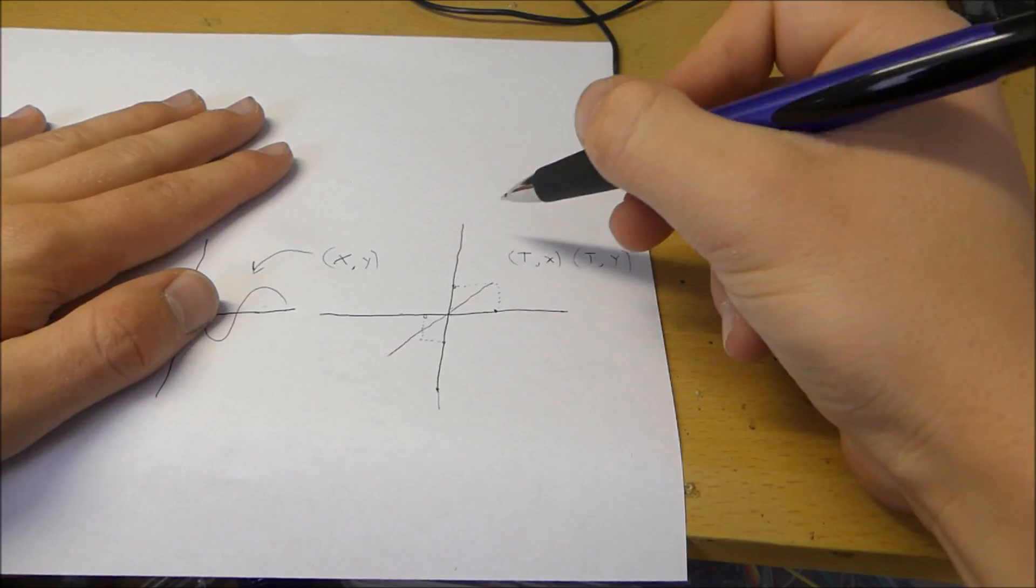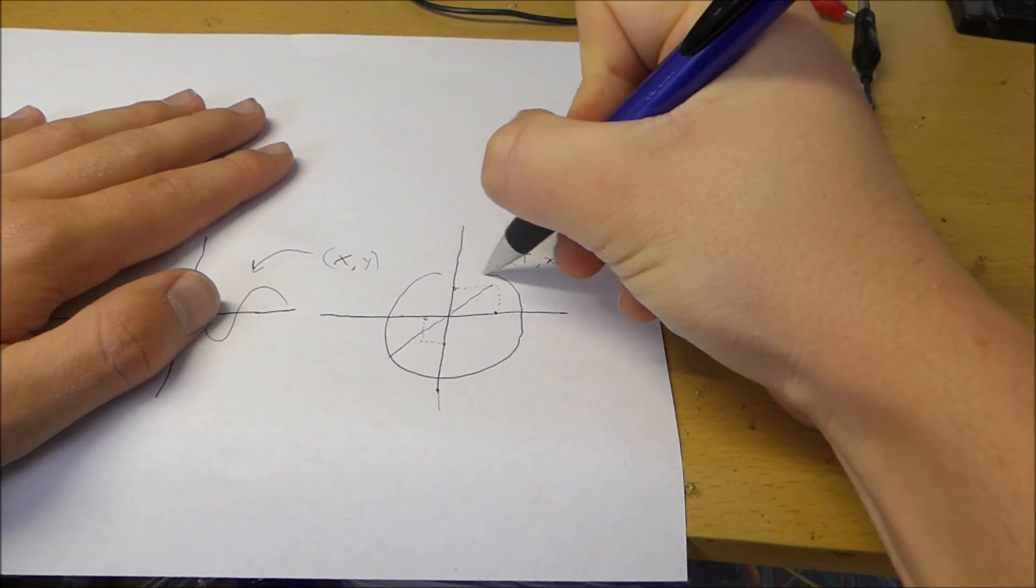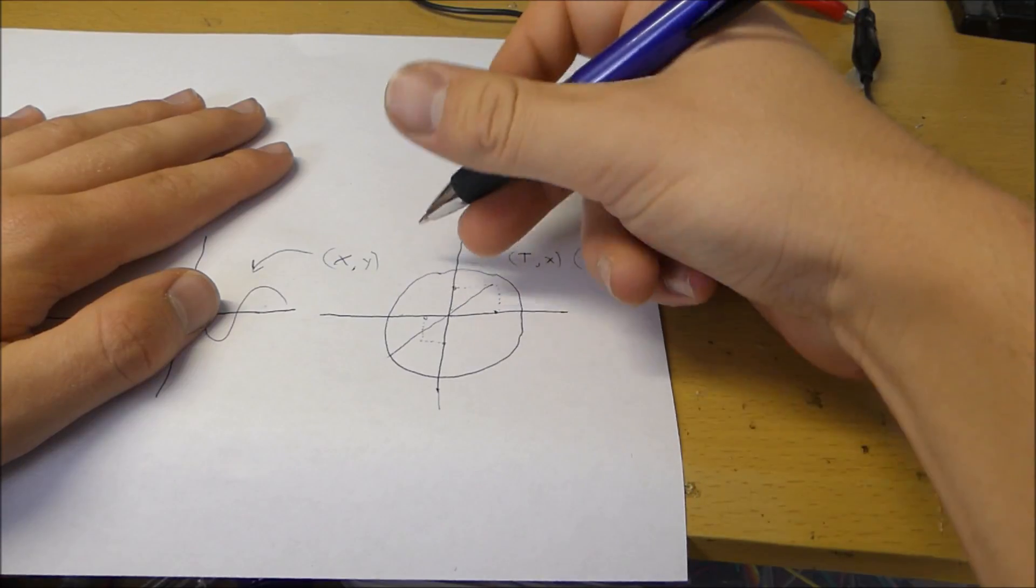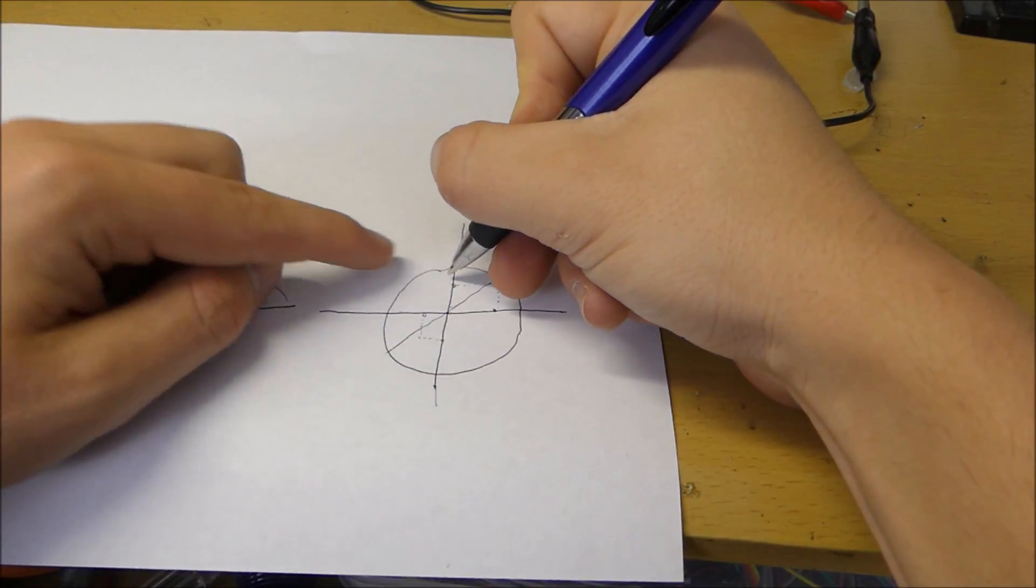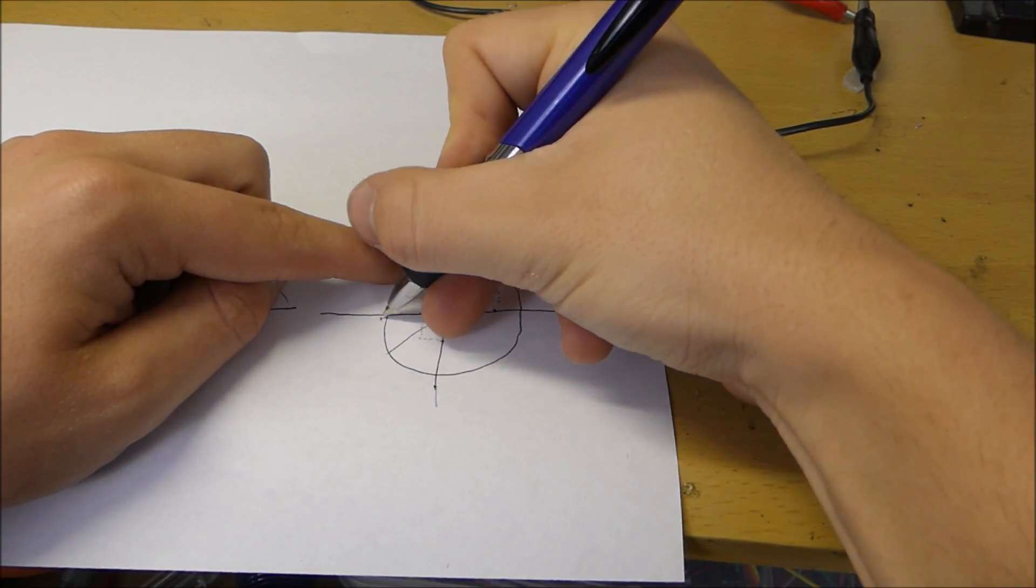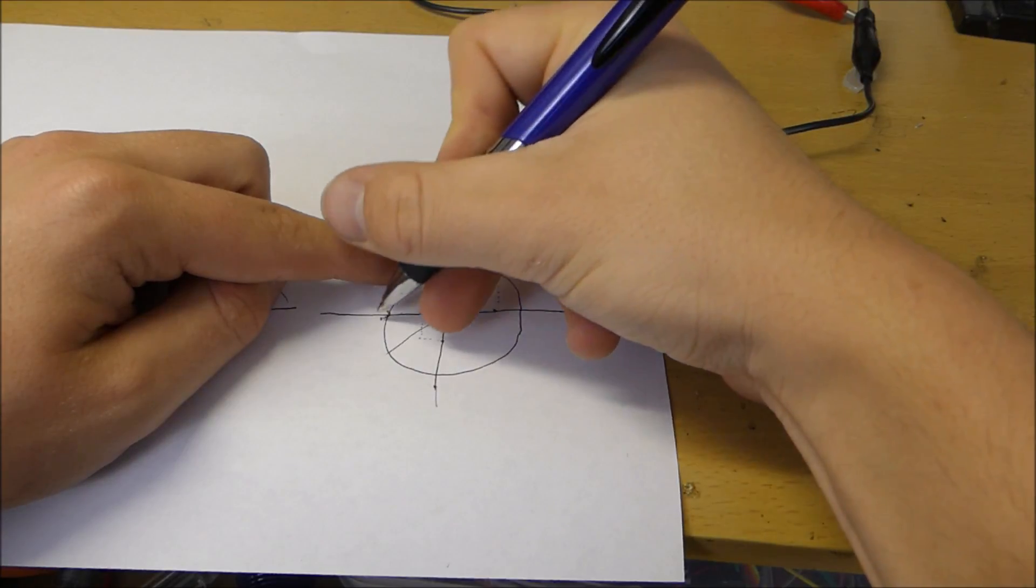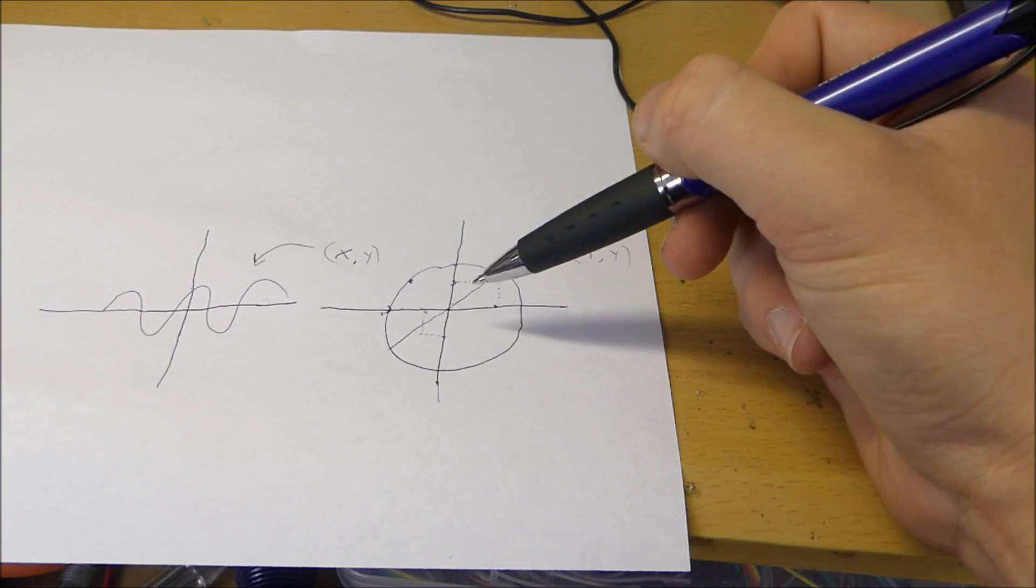Now when each function is 90 degrees at a phase, it will generate a circle. It will generate a circle because at one point the x is right here and the y is right here. And then the x will change to right here, so they'll both be right here, and then it'll be right here, and right here. As you can see, when they're 90 degrees at a phase it'll move in such a way to create a circle.